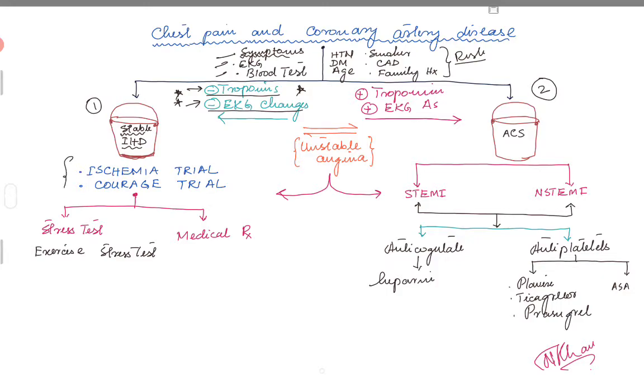This is the category of patients where all these trials that we're very fond of talking about apply—the ISCHEMIA trial, the COURAGE trial. These are patients who are stable, not in any bad situation at this point, and you have time to further confirm your diagnosis.